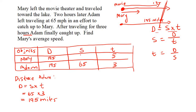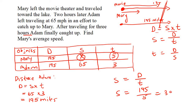Now we can calculate Mary's speed. Speed is equal to distance over time — we know the distance for Mary and we know her time. She obviously traveled a bit slower than Adam because he was able to catch her. She only traveled at 39 miles per hour. The question said find Mary's average speed, so yes, we did answer the question. Mary traveled at 39 mph. Now we're going to do some more examples.